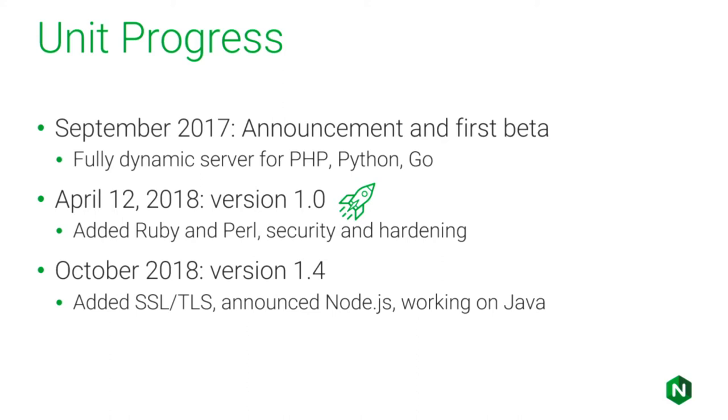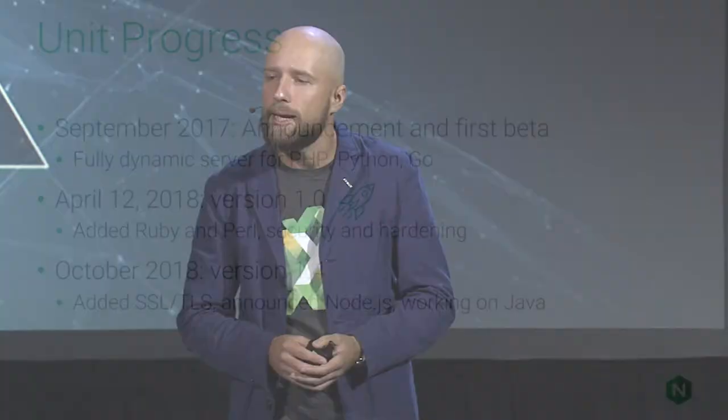You are now able to have security everywhere across your application stack. On the UNIT side, it's really easy to change and replace SSL certificates without any concept of reloading processes — you just give the software the API call with new SSL certs, and that becomes available immediately. Our team is currently working on support for the next application language, which is going to be Java, and we will update you on the progress as soon as that is available.